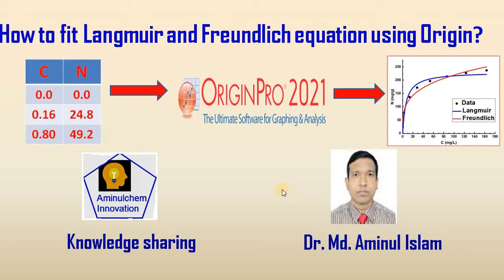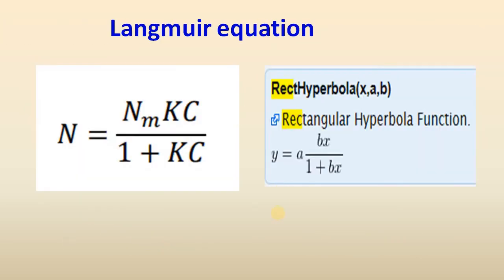In order to fit the Langmuir and Freundlich equations, we first need to know what the Langmuir equation is. The Langmuir equation was originally used for adsorption of gas onto a solid surface. Now it is used for gas-solid and liquid-solid systems. The Langmuir equation considers the formation of a monolayer onto a homogeneous surface.